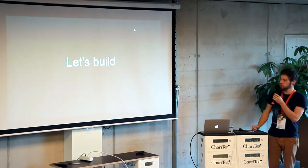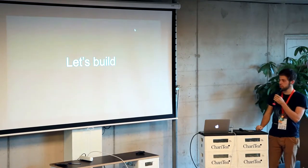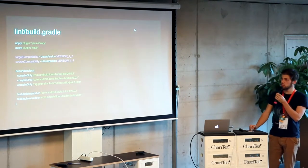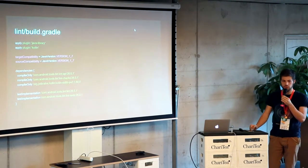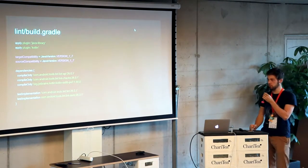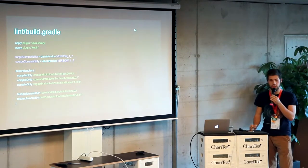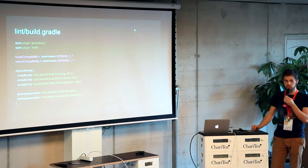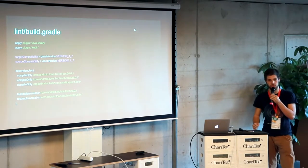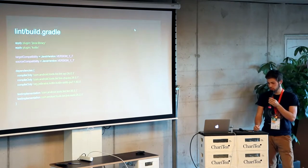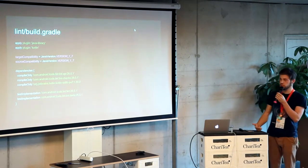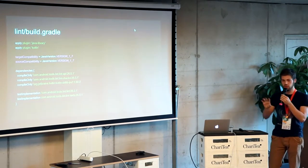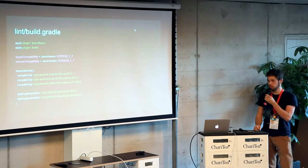That was pretty much it about the theory of configuring and suppressing. Now we're going to create our own Lint checks. What we need to do is create a new module - basically a Lint module. It's going to be a Java library and we're also going to use Kotlin, mainly because Kotlin is a nice language and also half of the Lint API is actually written in Kotlin. So you can take advantage of named parameters, extension functions, and deprecated annotations where you can alt-enter and replace to the new things.